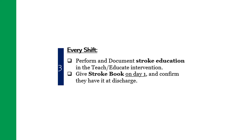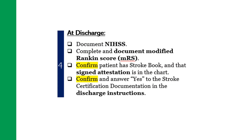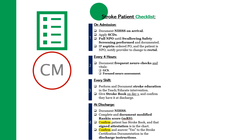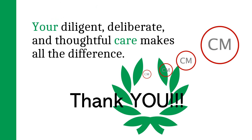Every shift, perform and document vital signs, get the Glasgow Coma Score, and perform a focused neurologic assessment. Perform and document verbal and printed stroke education, and check that the patient has the stroke book at hand. At discharge, document the NIH Stroke Score, complete and document the modified Rankin Score, confirm that the patient has a stroke book and that the signed attestation of receipt is in the chart, and confirm and answer yes to stroke certification documentation in the discharge instructions. Let's make the best care the standard of care — your diligent, deliberate, and thoughtful care makes all the difference.